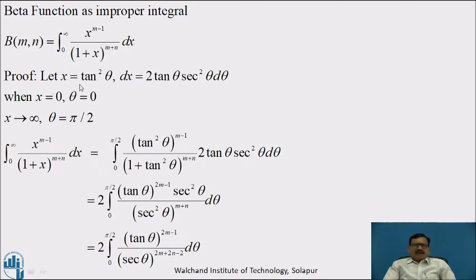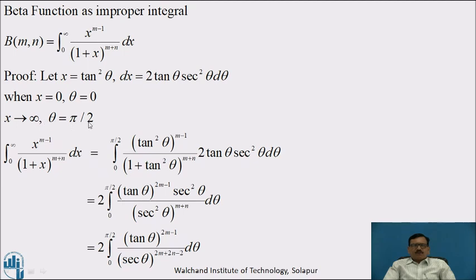Let x = tan²θ, then dx = 2 tanθ sec²θ dθ. Accordingly, we can change the limits. When x = 0, tan²θ = 0, so θ = 0. And when x tends to infinity, we get θ = π/2.